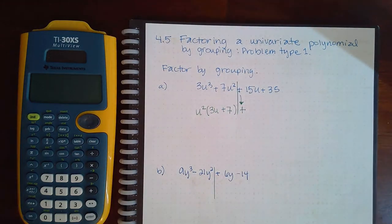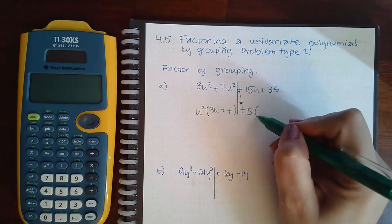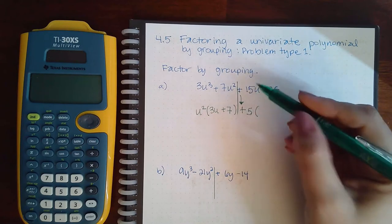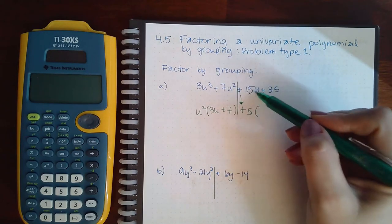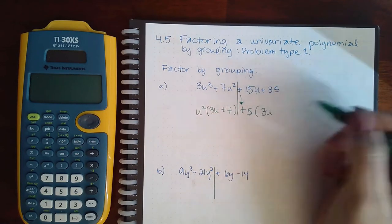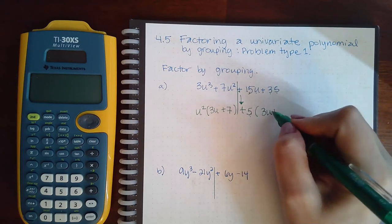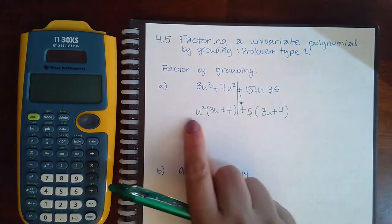From this side they can both be divided by 5 and it is a positive 5. So when I divide positive 15u by positive 5 I get a positive 3u. When I take positive 35 divided by positive 5 I get a positive 7.